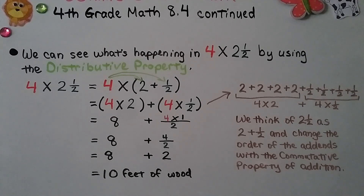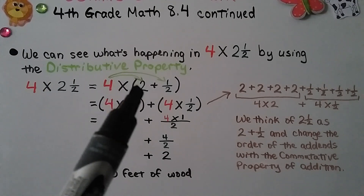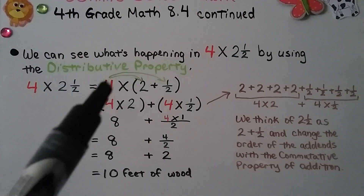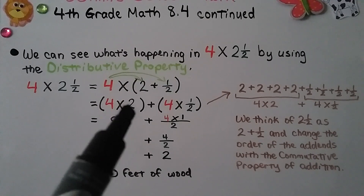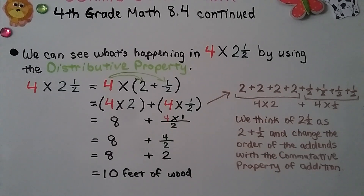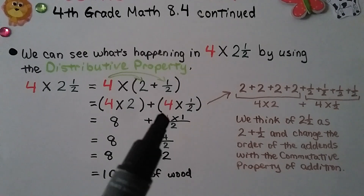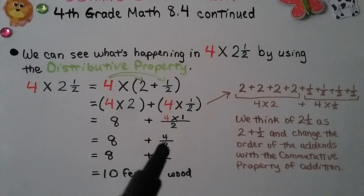We can see what's happening in 4 times 2 and a half by using the distributive property. We have 4 times 2 and a half, and we can think of it as 4 times (2 plus 1 half). We distribute the 4 to the 2 and multiply them, and we add it — because there's a plus sign — to 4 times a half. That gives us 4 times 2 plus 4 times a half. Well, 4 times 2 is 8, and 4 times a half is 4 times the numerator 1 over the denominator 2 — that's going to give us 4 halves. That's 8 plus 2, which is 10 feet of wood.